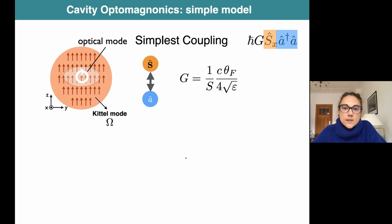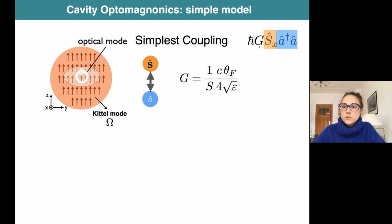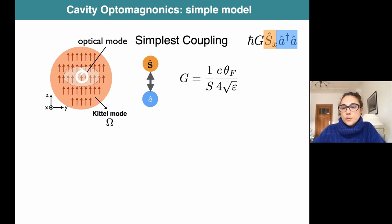We can take this model and simplify it into a toy model to study the optically induced spin dynamics. We consider a system magnetized in the z direction, and since we want to couple to the fluctuations of the magnetization, we consider one optical mode with an optical spin density pointing along x. We obtain a coupling term where the photon number operator couples to the x component of the spin. The coupling is proportional to the Faraday rotation of the material and inversely proportional to the number of spins or the magnetic volume. As usual, there is an enhancement as we go to smaller volumes.